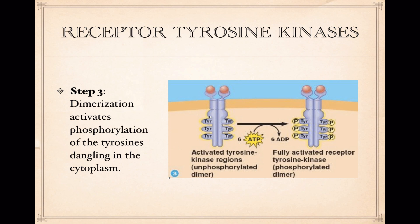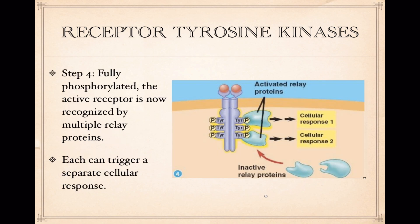In step three, once these tyrosine kinases have been activated by receiving their signal molecules and joining into a dimer, they are phosphorylated. It takes multiple ATPs — in this case six — to fully activate the system. Once completely phosphorylated, the receptor is completely active. Notice that this part of the molecule dangles down into the cytoplasm so that other molecules can interact with it.